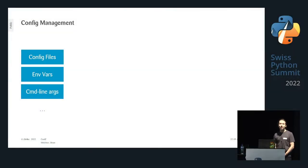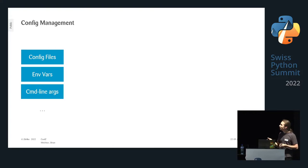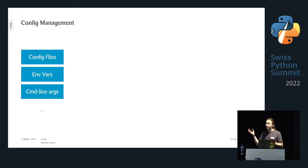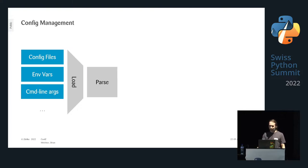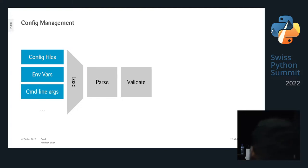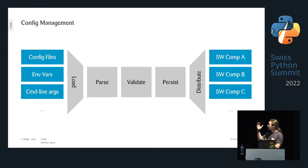When you write a program you get configuration from different sources — you have paths hard-coded in scripts, which you definitely don't want. Configuration can come from config files, environment variables (especially for secrets), and command line arguments. All of this tells your program how to behave. In basically every program we write the same few steps: load the config, parse it, validate it, persist it, and distribute it to different software components.